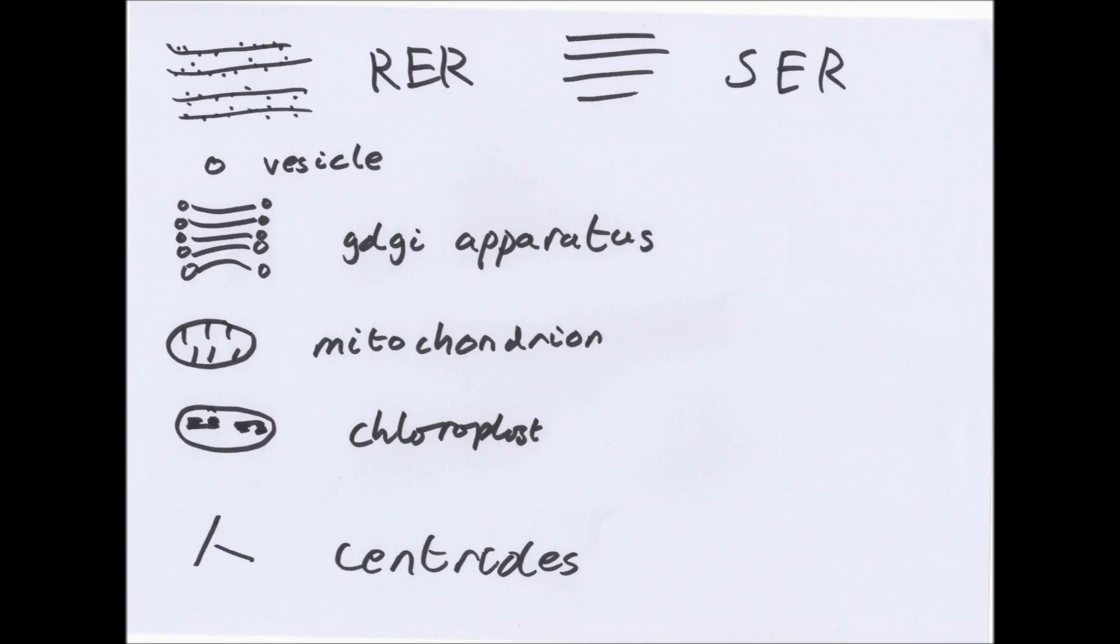Golgi apparatus. This is a group of fluid filled flattened sacs. Often there are vesicles on the edge. It processes and packages proteins and lipids and can also make ribosomes. So very important.